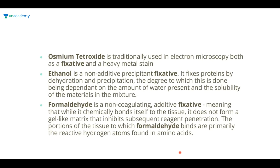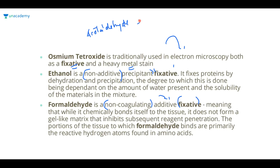Now for the theory: osmium tetroxide is traditionally used in electron microscopy both as a fixative and heavy metal stain. Ethanol is a non-additive precipitant fixative. Formaldehyde is a non-coagulating additive fixative. But acetaldehyde is the only one who is ineffective as a fixative — acetaldehyde cannot act as a fixative.